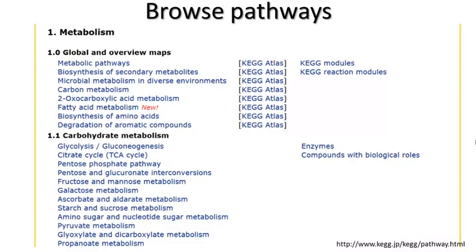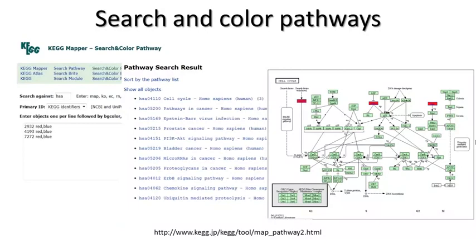The KEGG pathways can be browsed in its hierarchical structure. You can also search for a pathway of interest. I mentioned earlier that an entry has a feature called graphics. The user can input a list of genes that she wants to highlight by specifying the gene ID and the background and foreground color and the gene will be highlighted in the pathway map.